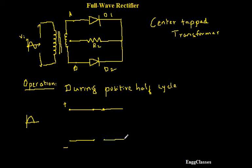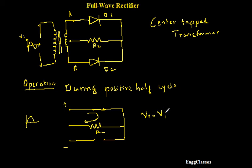So D2 is reverse biased and replaced with an open circuit. Now I include the load resistor RL. This forms a closed circuit, and current flows through it. The output voltage V-out is equal to the input voltage Vi. So during the positive half cycle, point A is positive with respect to point B, diode D1 conducts and is replaced with a short circuit, diode D2 is reverse biased and replaced with an open circuit, and therefore V-out equals Vi.